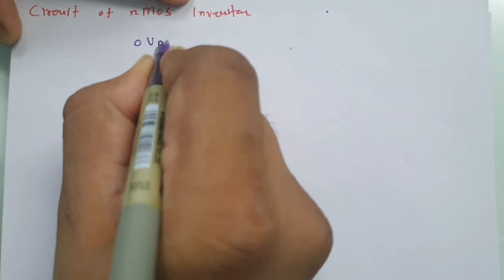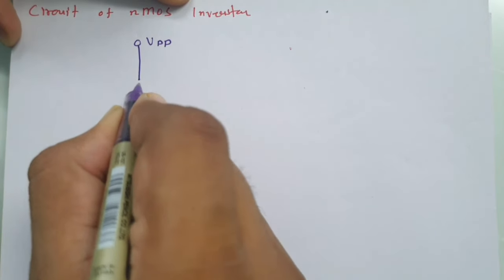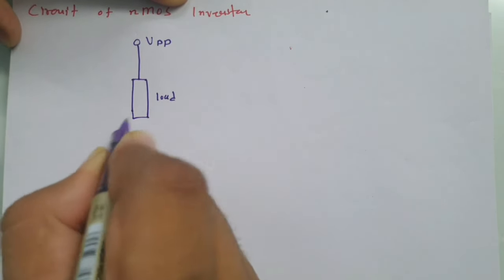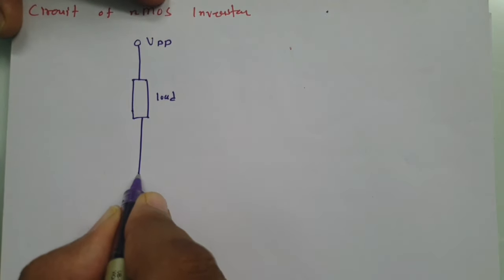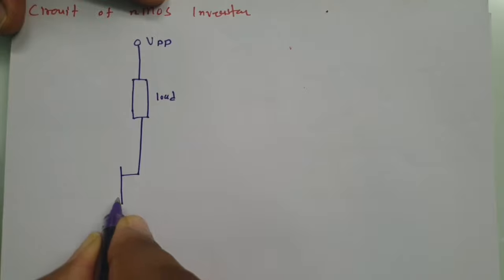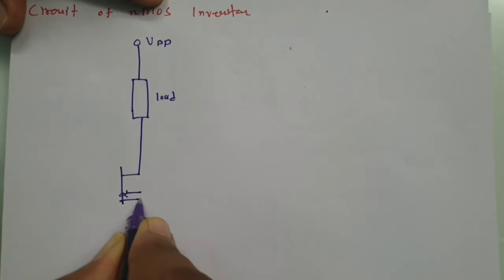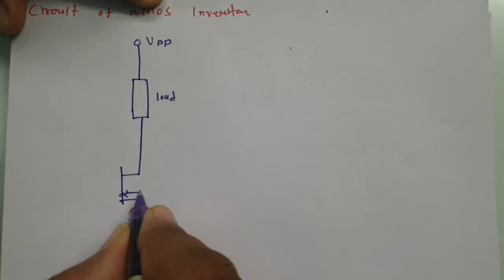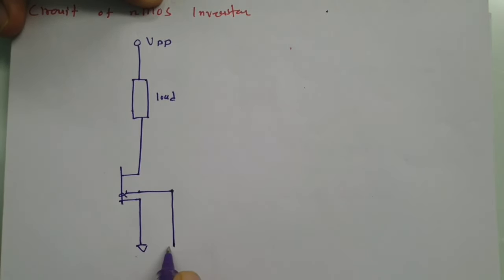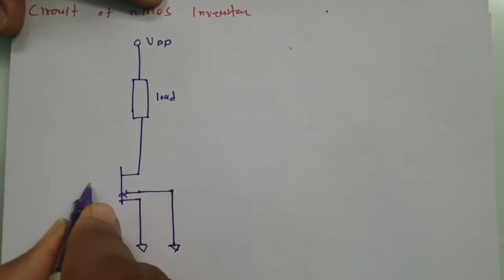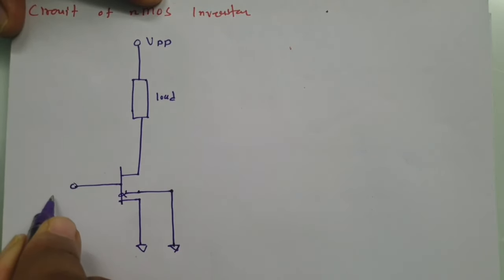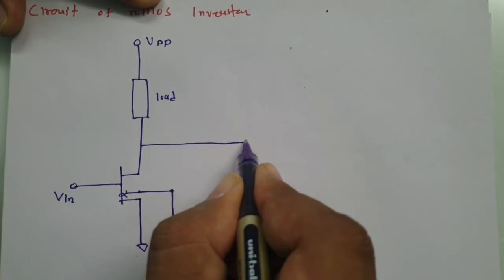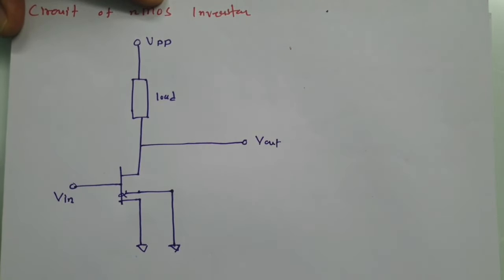In the NMOS inverter circuit, we have VDD connected to a load. After the load, we have an NMOS transistor. The source terminal is grounded, as well as the base terminal. With the gate terminal, we apply the input, and from the drain terminal we take the output.